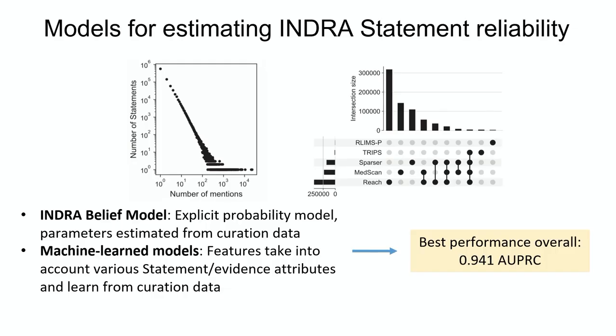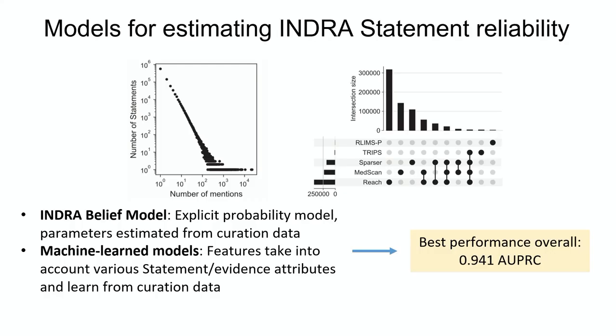Given all the evidence from different extraction systems and curated sources for a given mechanism, we have models to estimate confidence — we call it the belief score. These can be explicit probability models that actually model the error rates of text mining systems to come up with a joint probability of correctness, or machine-learned models that rely on a large corpus of curations we have done internally. We have just released that dataset — where we looked at statements and sentences that are supposed to support them and scored whether they are correct with respect to the statement — and trained machine-learning models to predict correctness based on that training data.